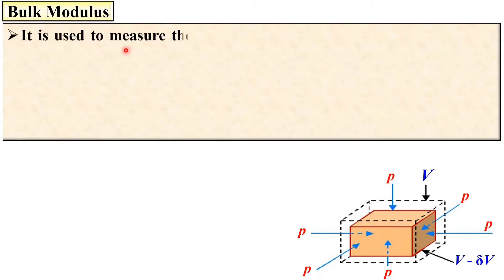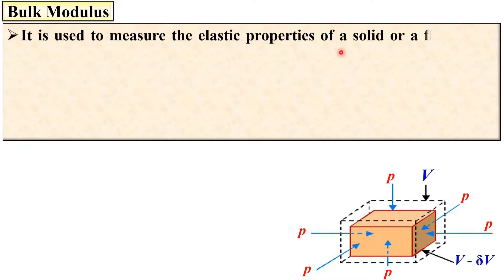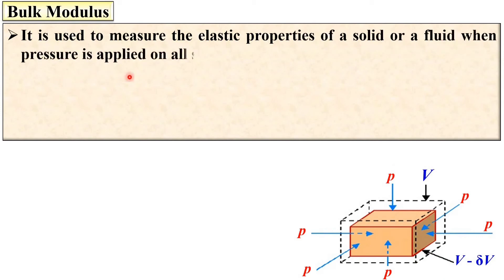Initial volume is capital V and final volume is capital V minus delta V. So the change in volume due to this pressure is delta V. Bulk modulus is used to measure the elastic properties of a solid or a fluid when pressure is applied on all surfaces.